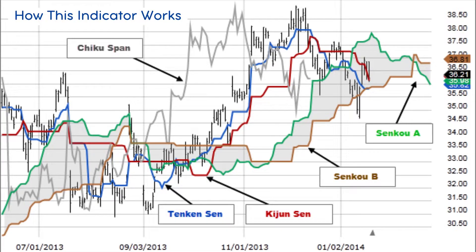When Tenkan Sen and Kishu Sen are decidedly below the cloud, the issue's trend is negative. Using the cloud to determine trend: when prices are above the cloud, the trend is up; when prices are below the cloud, the trend is down.